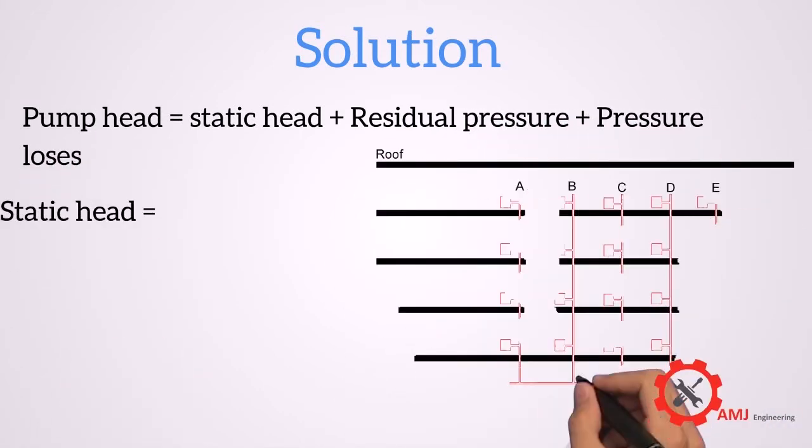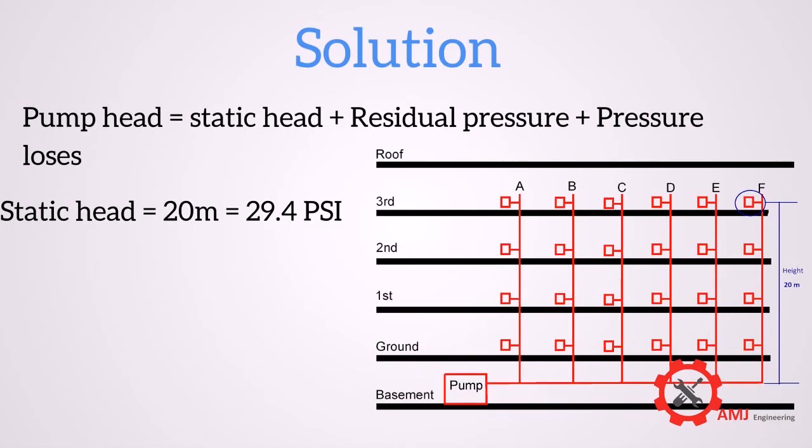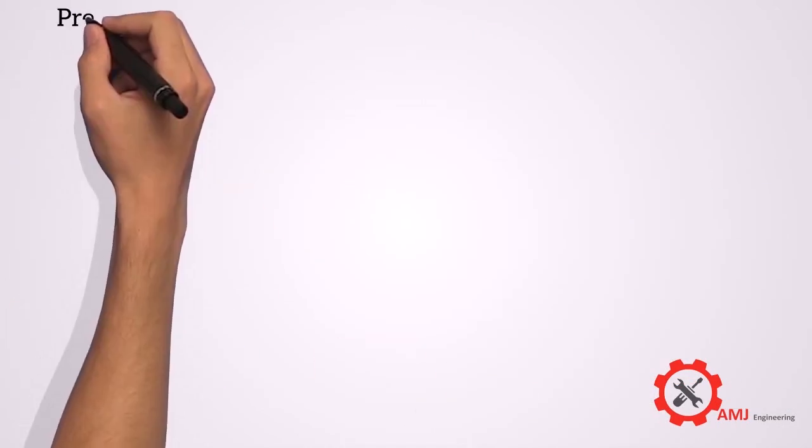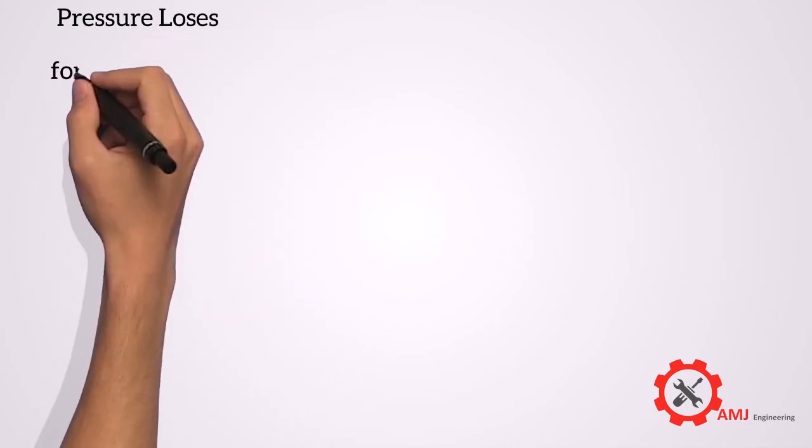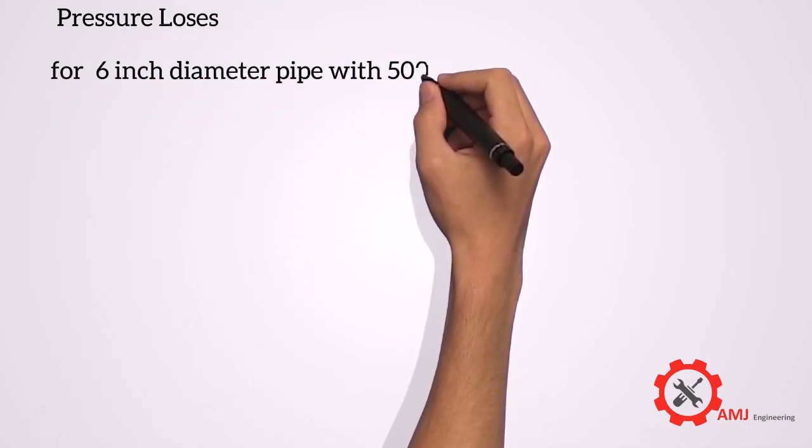Static head equals 20 meters equals 29.4 psi. Residual pressure equals 100 psi being class 1. Pressure losses for the six inch diameter pipe with 500 GPM.